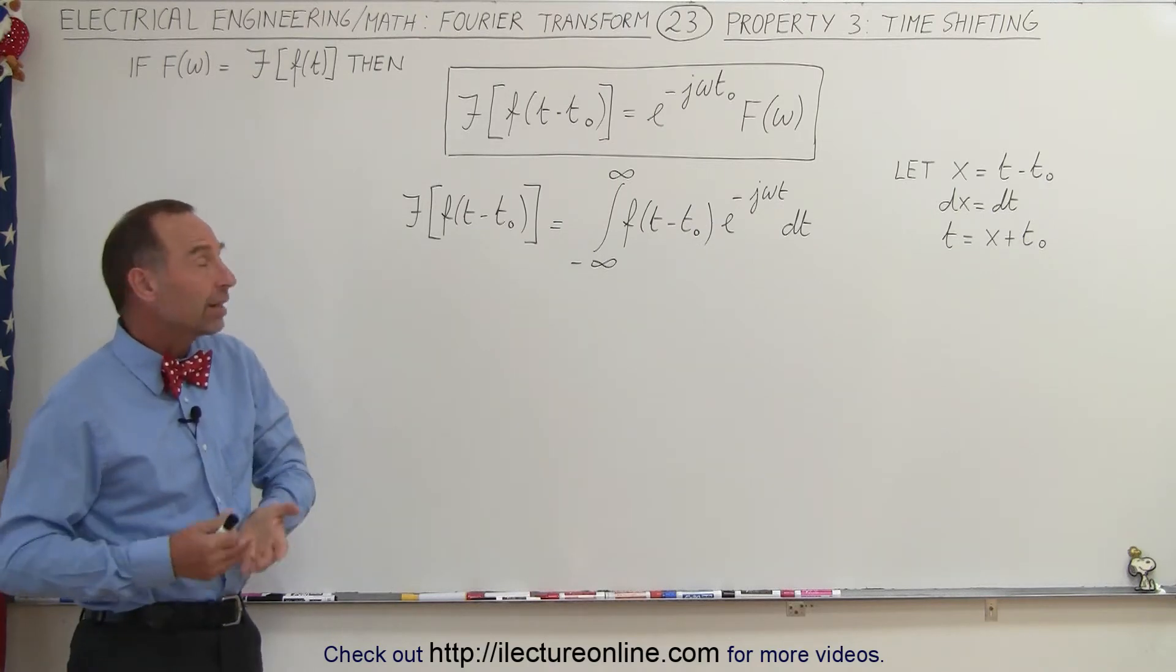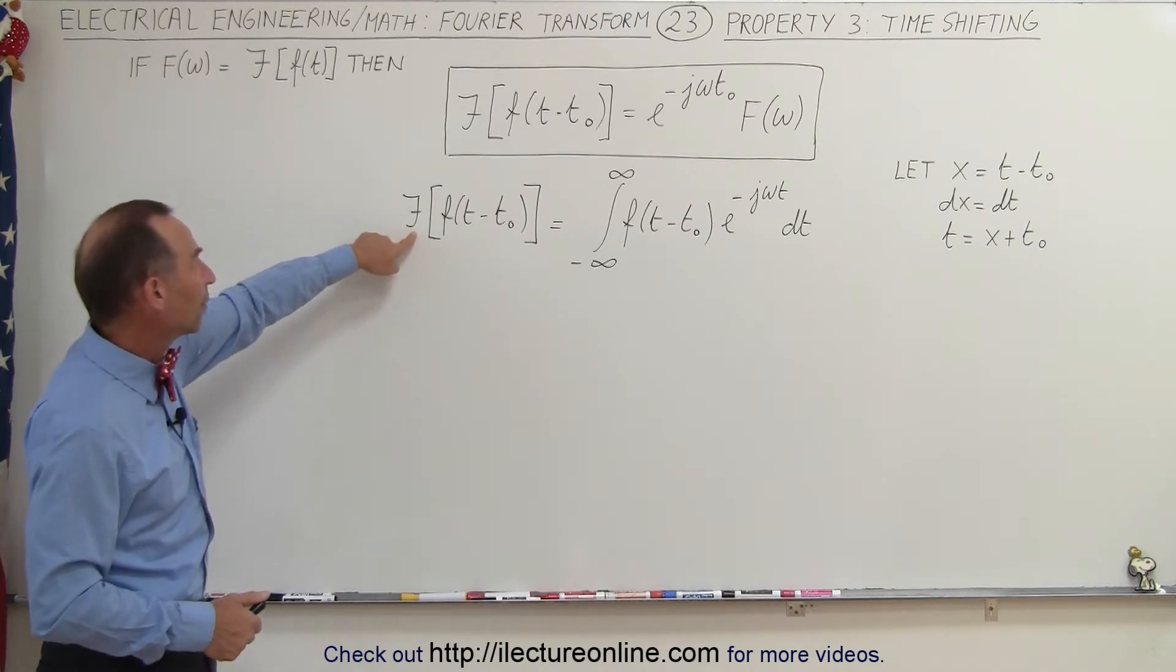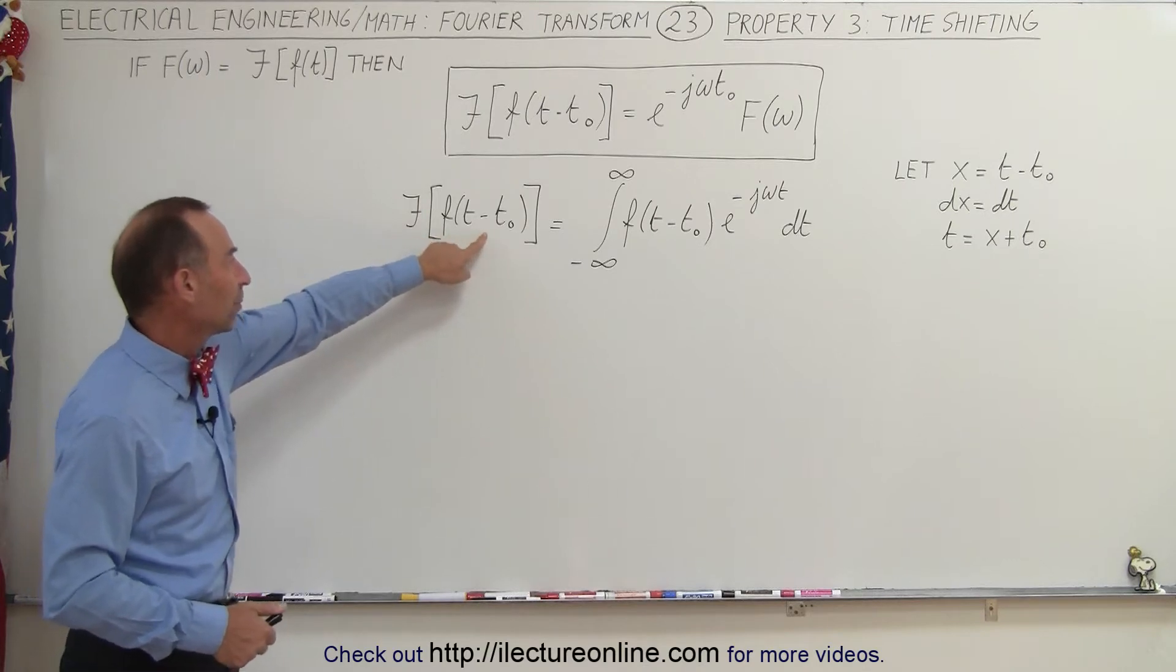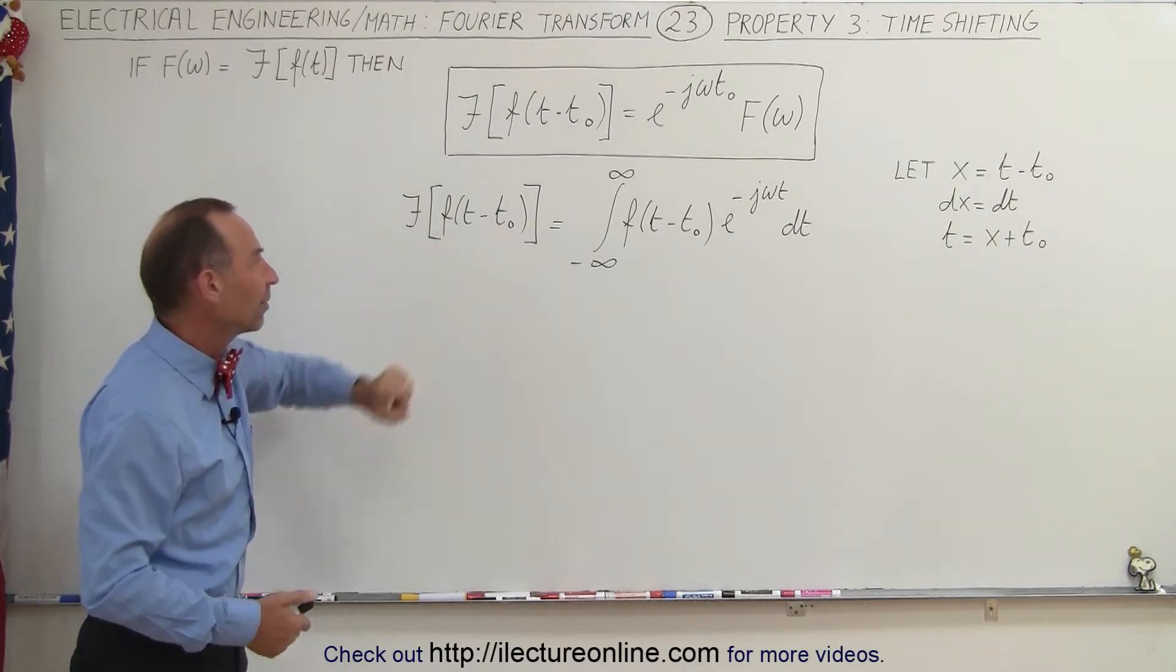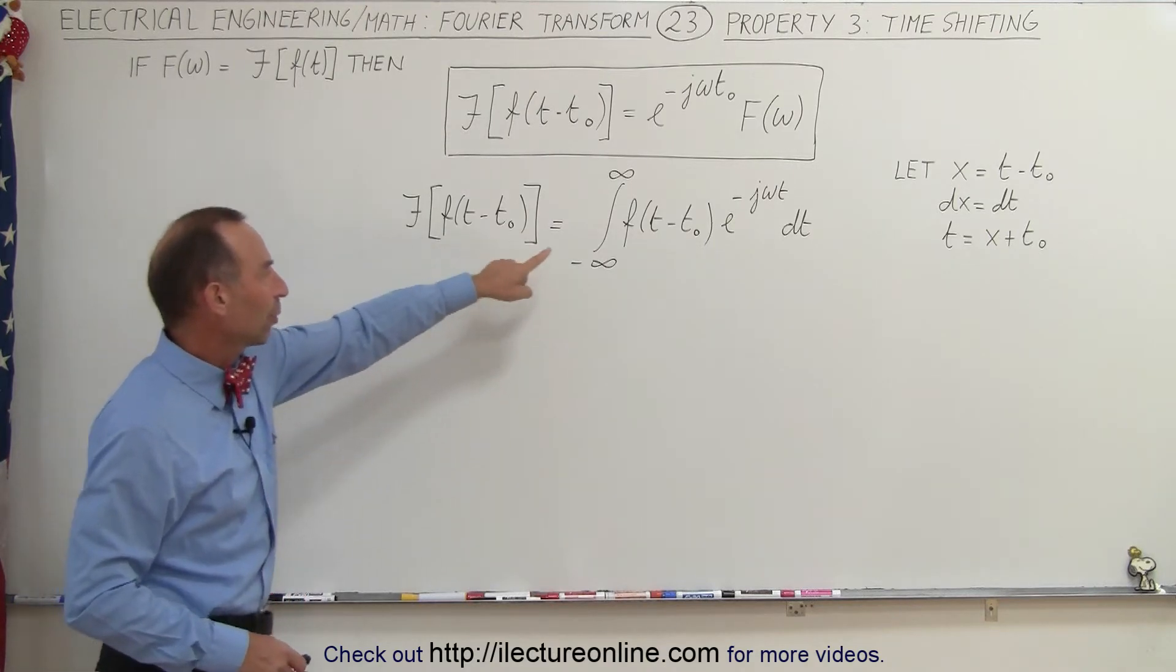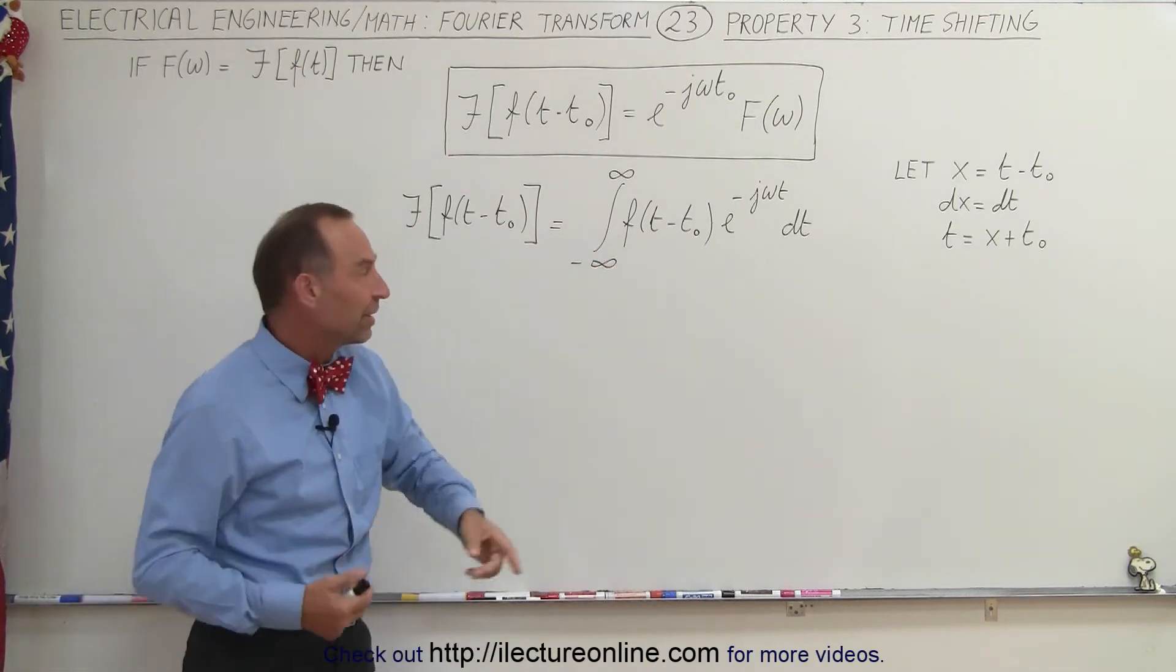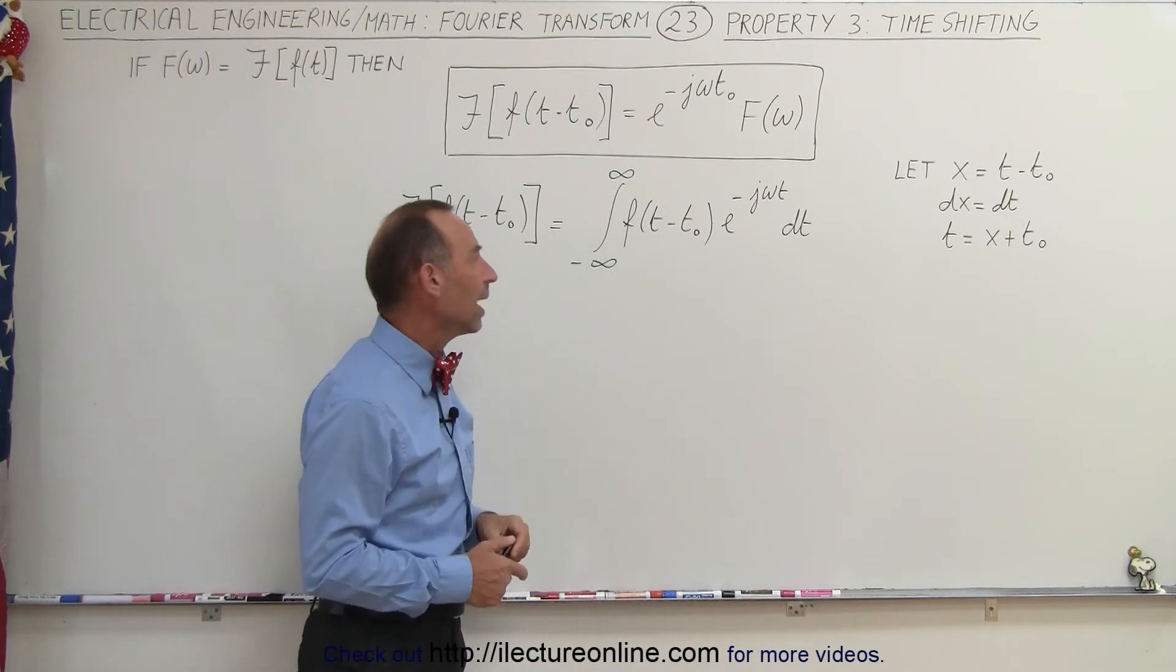How do we prove that? How do we show that? Well, let's go ahead and try to take the Fourier transform of a function that has been shifted in time to the right, by a certain amount of t sub-naught. And so when we plug it into our general equation, instead of f of t, we write f of t minus t sub-naught.